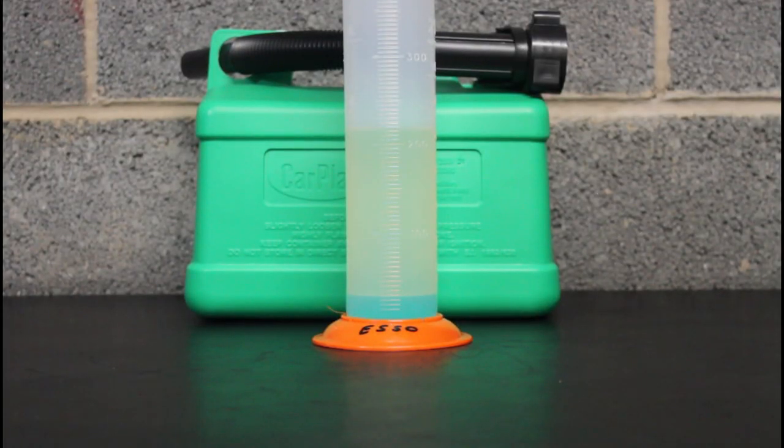In at number eight is Esso. Another seven and a half percent. Yeah not great. Came in at 142.9 so it's quite a bit cheaper but exactly the same result, it's no different to the Texaco. Looks very similar as well so yeah that's in at number eight.